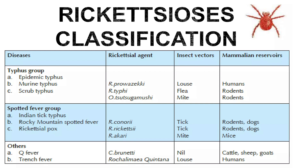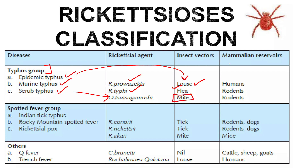In the classification of Rickettsiosis — same genus but different species — the typhus group includes three types: epidemic typhus, murine typhus, and scrub typhus. Epidemic typhus is caused by Rickettsia prowazekii, murine typhus by Rickettsia typhi, and scrub typhus by Orientia tsutsugamushi. Their vectors are: epidemic typhus by louse, murine typhus by flea, and scrub typhus by mite. Mammalian reservoirs: humans for epidemic, rodents for murine, and rodents for scrub typhus.